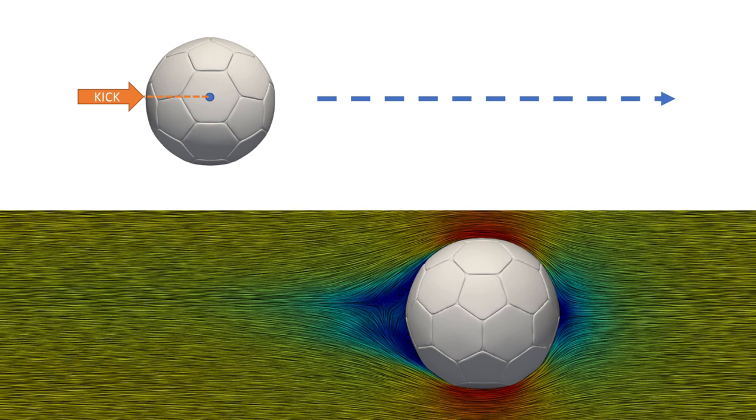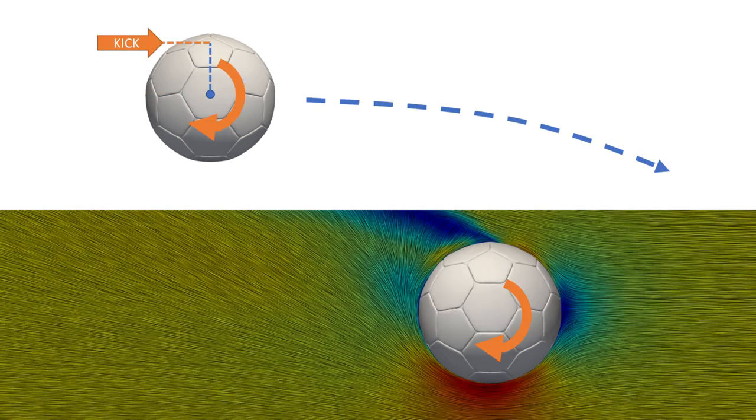When you hit the ball at the center, it will move more or less in a straight line. But when you hit it off-center, you will give it a spin around the center axis.